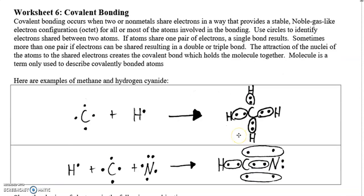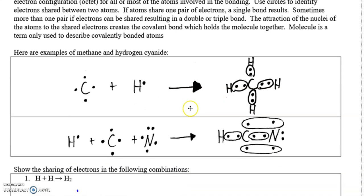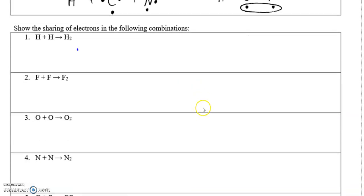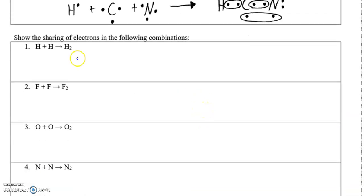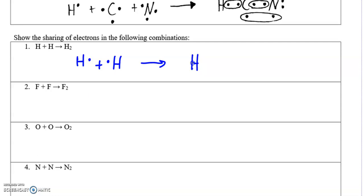Hello chemistry students. I'm going to try and go over the homework with you. We'll start out here on worksheet six. Let's show the bonding between the hydrogens taking place. We'll start out by drawing the Lewis dot diagrams for the atoms involved and then we'll show how they share to achieve an octet or noble gas-like configuration of electrons.